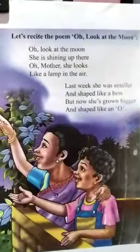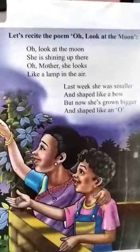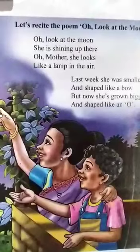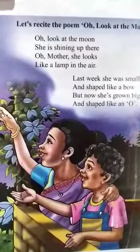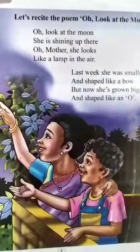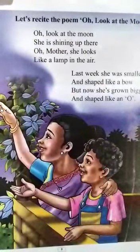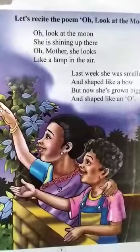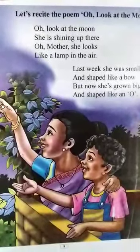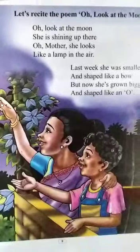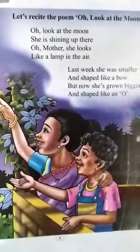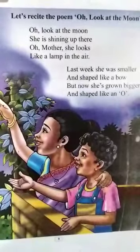Oh, look at the moon — the child is telling their mother to look at the moon. Oh, mother, she looks like a lamp in the air — the moon looks like a glowing light. Last week she was smaller and shaped like a bow.